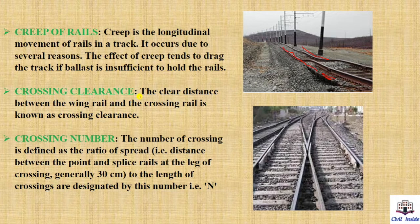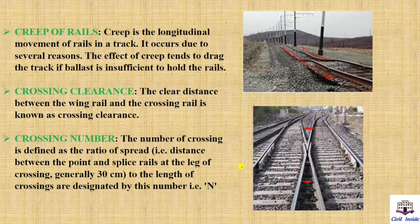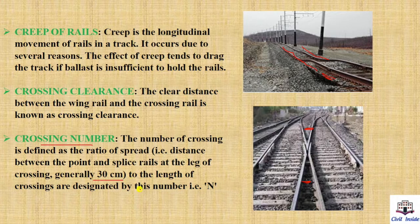Next, crossing clearance. The clear distance between the wing rail and the crossing rail is known as crossing clearance. Next, crossing number. The number of a crossing is defined as the ratio of the spread — that is, the distance between the point and splice rail at the leg of the crossing, generally 30 cm — to the length of crossing, designated by the number N. The crossing is designed by this crossing number.